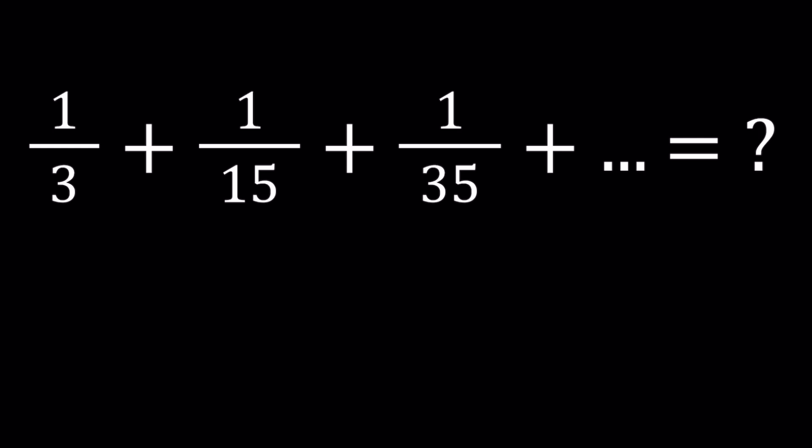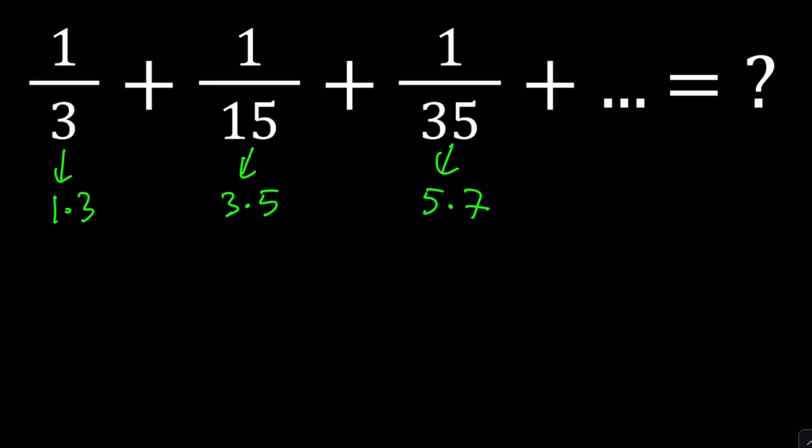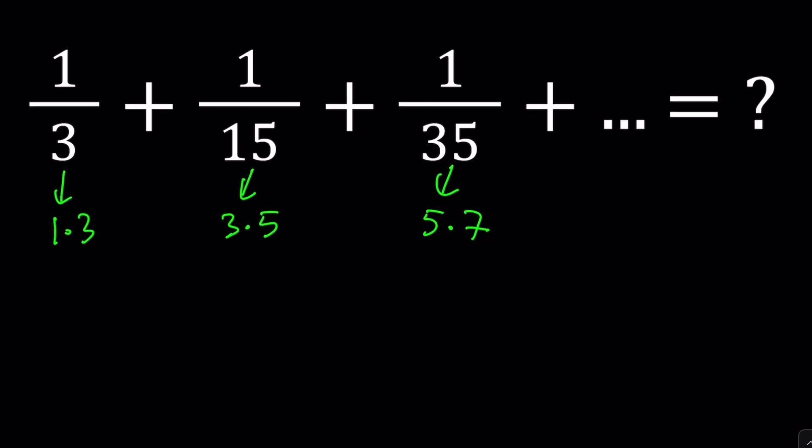First of all, notice that the denominators are odd numbers, but not only that, they are actually product of consecutive odd numbers, such as 3 can be written as 1 times 3, 15 can be written as 3 times 5, and 35 is 5 times 7. Of course, the next term is going to be 7 times 9, and then 9 times 11, so on and so forth. That's the pattern we're looking at, and we want to evaluate this infinite sum.